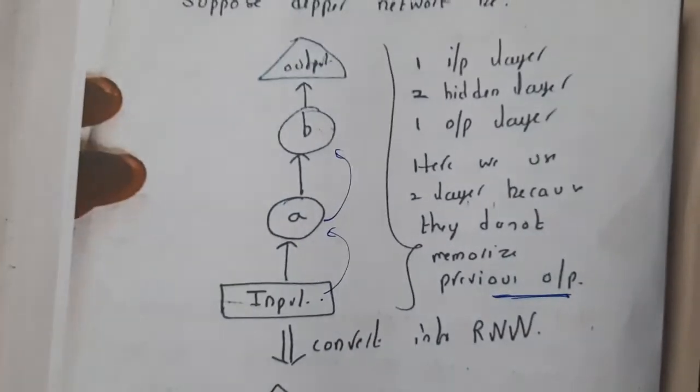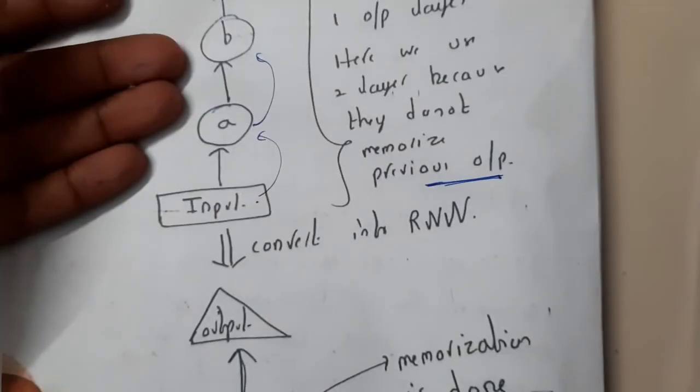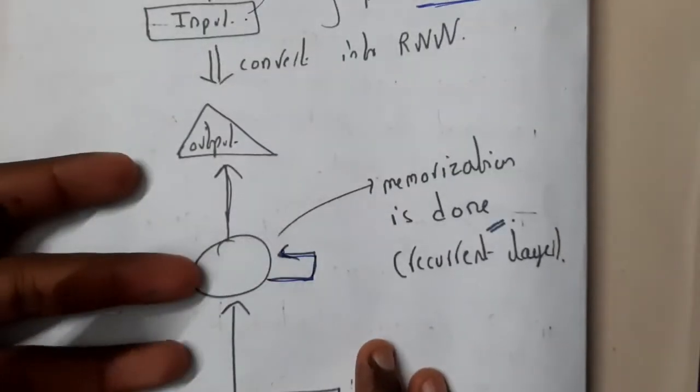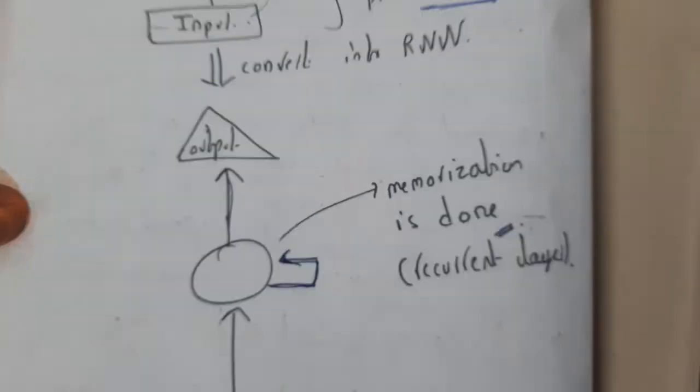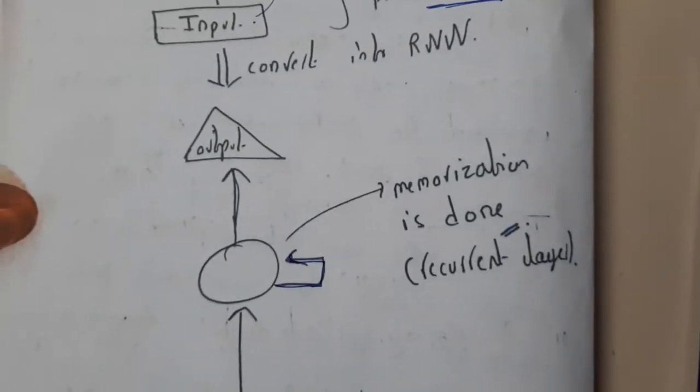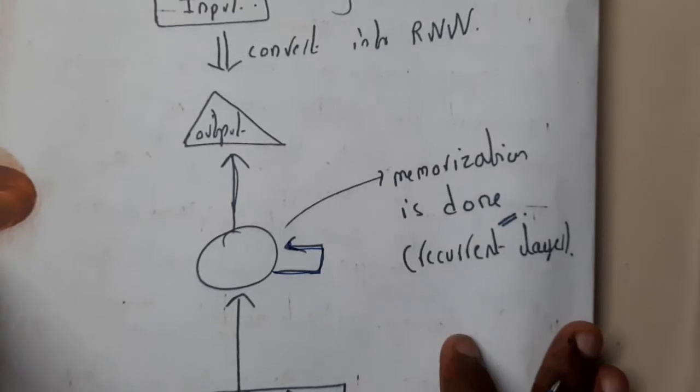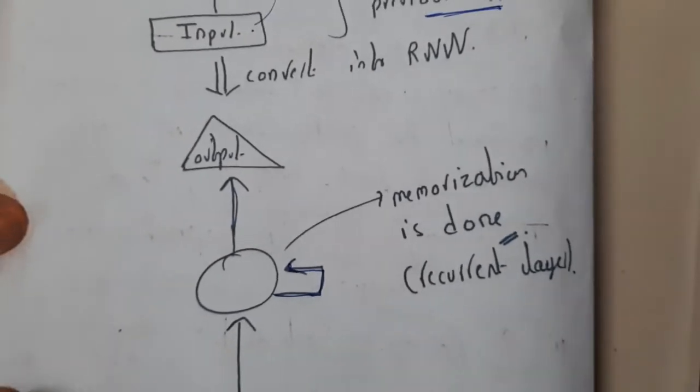I hope everyone got a small idea. This is a small example in normal deep learning. When you convert it into RNN you'll be getting a loop like this. I hope everyone got a small idea on this. In the next lecture we will be going through some important topics of this chapter. Thank you, thanks for watching.